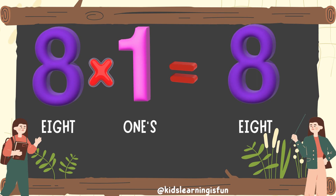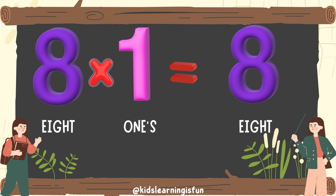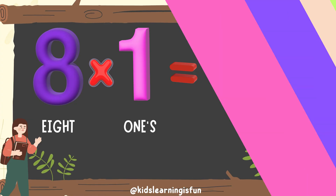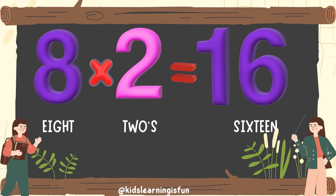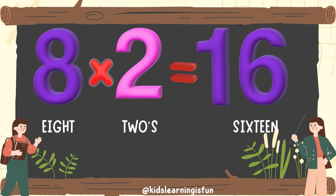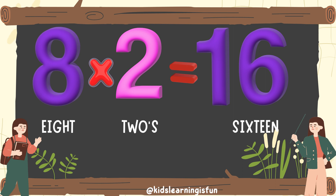Eight ones are eight. Eight twos are sixteen.